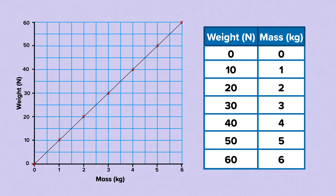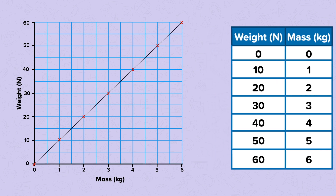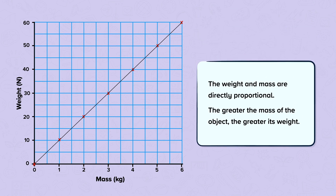This will help us identify the trend of our data. The graph shows that weight and mass are directly proportional. This is shown by the straight line that goes through the origin. From the graph we can conclude that the greater the mass of the object, the greater its weight will be.